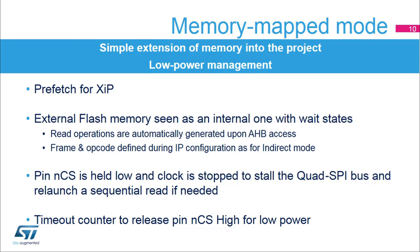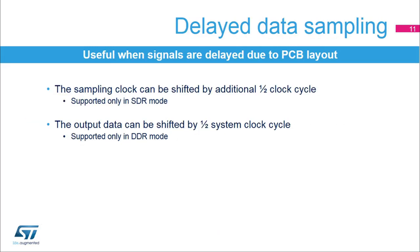This mode also supports SIOO mode, or 'send instruction only once', supported by certain flash memories, which allows the controller to send an instruction only once and remove the instruction phase for following accesses. Delayed data sampling allows users to compensate for the delay of signals due to constraints on the PCB layout optimization. It allows applications to shift the data sampling time by an additional one-half clock cycle when operating in SDR mode. In DDR mode, the output data can be shifted by one-half system clock cycle to relax hold constraints.